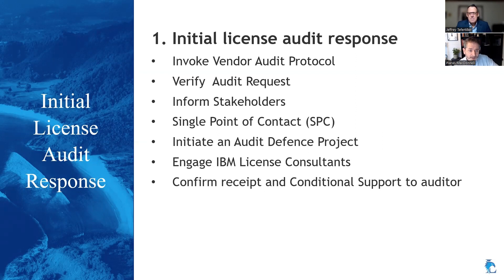The next step is informing the stakeholders — this is going to be a wide audience within your organization. There will be potentially legal, procurement, SAM managers, and technical teams. You'll need to contact them to let them know an IBM audit is in process, to be ready for it, but also to manage their own communication. Next is establishing a single point of contact, both within the organization and in communication with the auditor. This ensures all information is managed, requests are handled properly, information is reviewed and checked, and no accidents occur — such as releasing information that should not be.